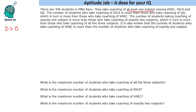So DILR > QA > VARC. The number of students taking coaching of exactly one subject is more than those taking exactly two subjects, which in turn is more than those taking all three subjects. It is also known that the number of students who take coaching of VARC is more than the number taking exactly one subject.